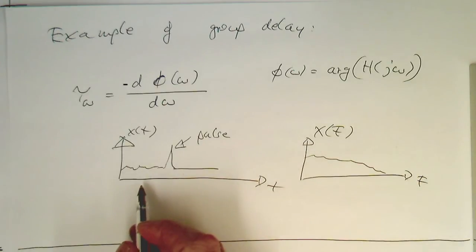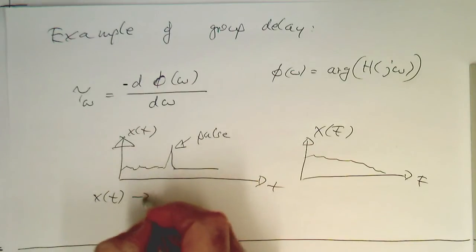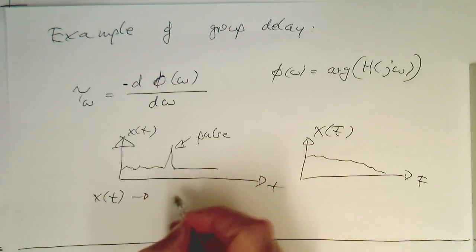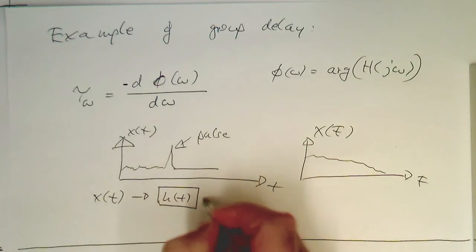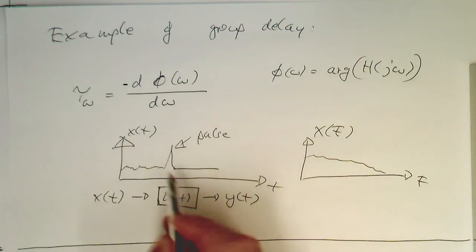Now imagine we're using a filter to filter this. Our x of t, we send through a filter, and we have our y of t. Obviously, what we want is that after filtering, we'd like to have this pulse shape, the moment when the drum kit is hit, to stay together, so that this is still a pulse localized here.